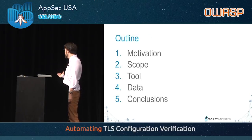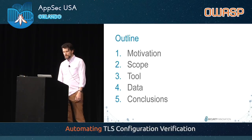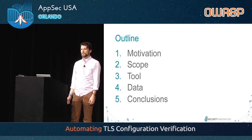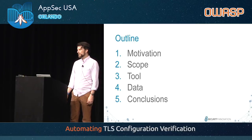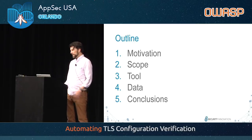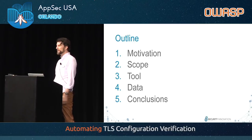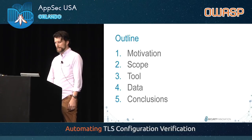A quick outline of today's talk — we'll hit five points. This was an independent research project of mine, scratching my own itch, a problem I had that I wanted to solve. We'll talk a bit about the motivation, the scope of the research, the tool I built, some data, and conclusions.